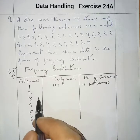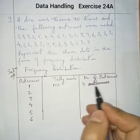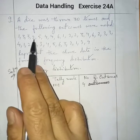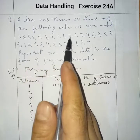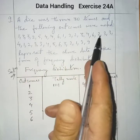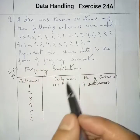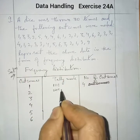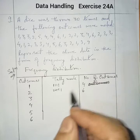For outcome 2, we count how many 2s are there in the outcomes. Counting: 1, 2, 3, 4, 5, 6. So there are 6 twos. The number of outcomes for 2 is 6.